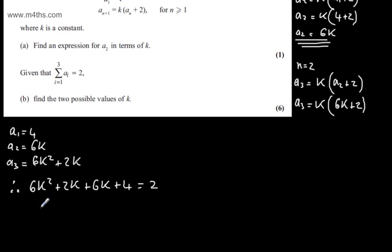If we tidy this up we have 6k squared plus 8k plus 2 equals 0. I can divide the equation by 2, so we would have 3k squared plus 4k plus 1 equals 0.